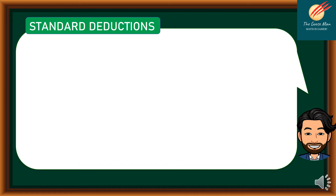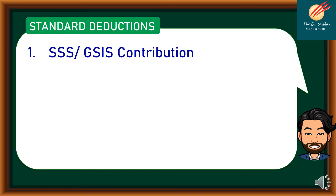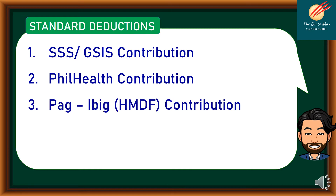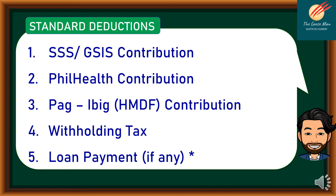There are five standard deductions we will discuss. First is the SSS or GSIS contribution. Second is the PhilHealth contribution. Third is the Pag-IBIG or Home Development Fund contribution. Fourth is the withholding tax. And fifth, which is optional if applicable, is loan payment.